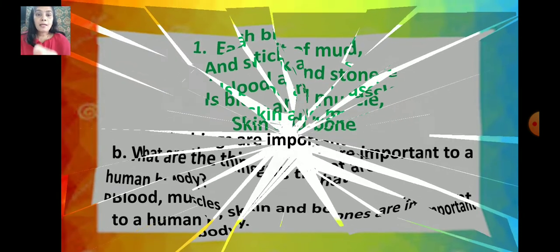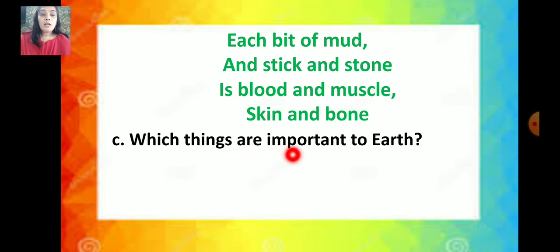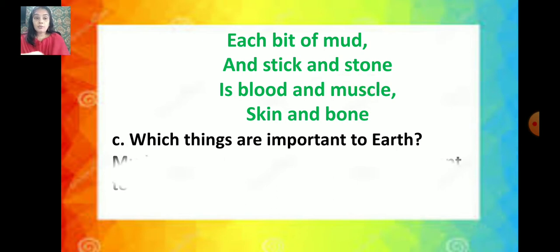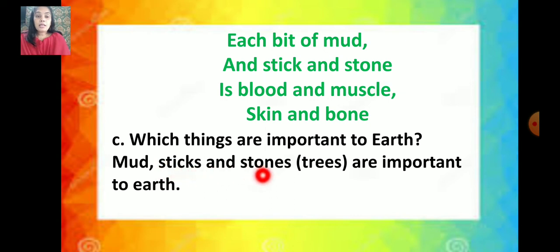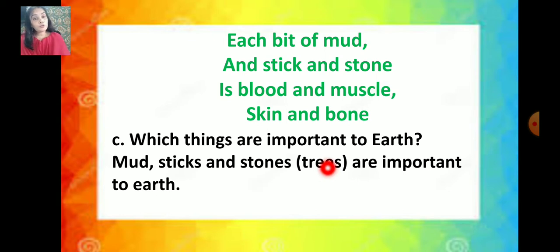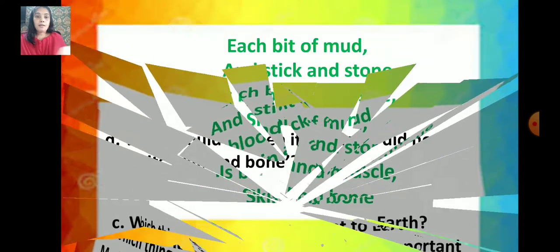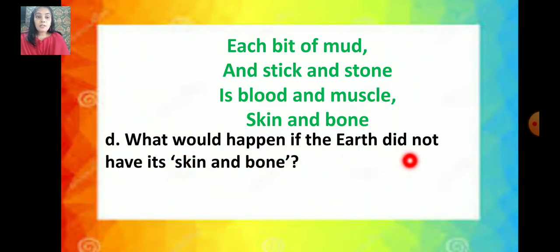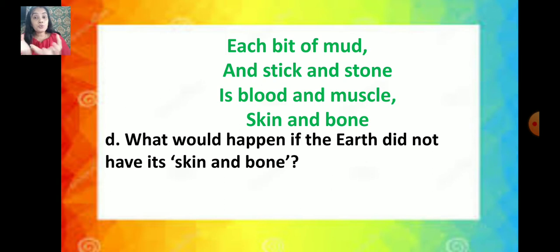The next C question: which things are important to earth? Mud, stick and stone are important to earth — trees are also given in the poem. So mud, stick and stone, and trees are important to earth. The next question is: what would happen if the earth did not have its skin and bone — meaning if the earth doesn't have mud, stone, and trees?